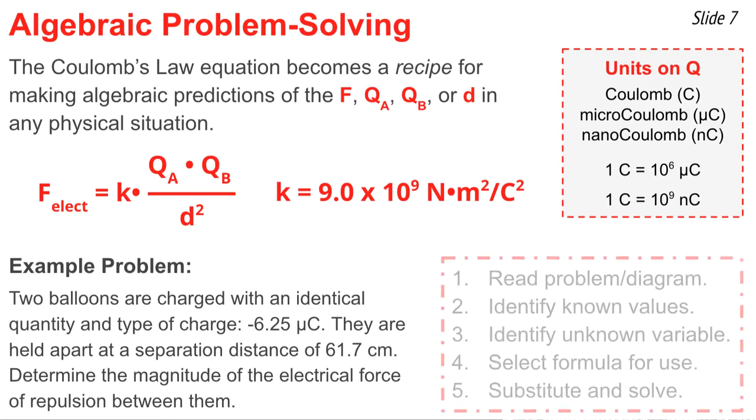Here's a typical problem. In order to solve this problem or any problem in physics, it's always wise to follow five steps. The first step is to read the problem and to diagram it in order to develop a mental picture. The second step is identify known values of the variables in the equation. The third step is identify the unknown variable. You should express these variable values in the unknown using the symbols of the equation. Then select a formula for use, maybe even rearrange it to get the unknown variable by itself. Finally, substitute known values into the equation and solve for the unknown variable.